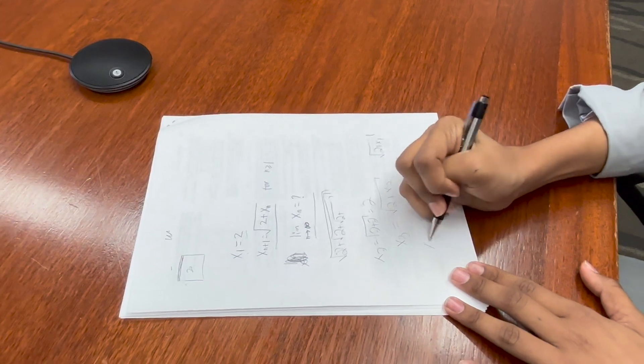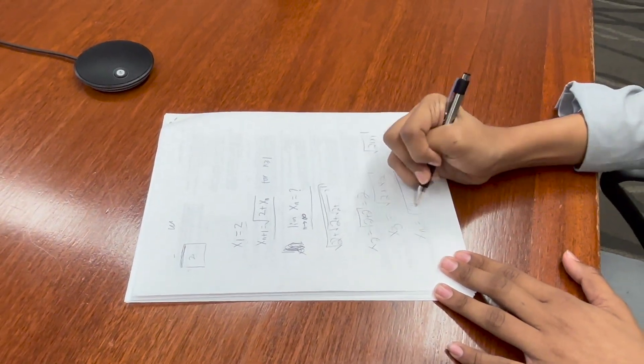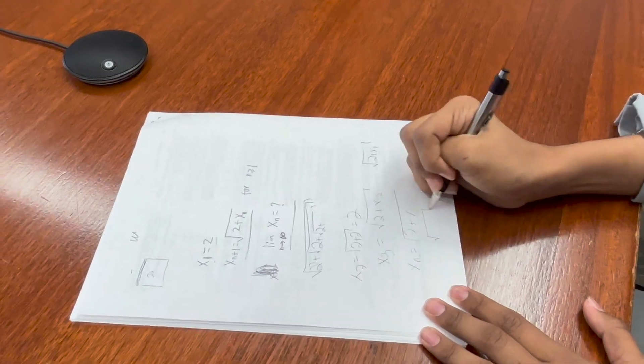So it can be said that any xn is equal to the square root of 2 plus x1, but x1 is just 2, so any xn is just 2. Yeah, this is a trick question.